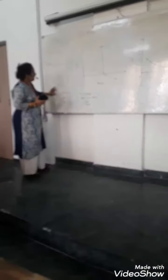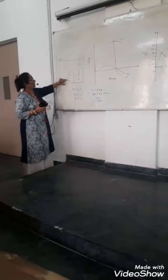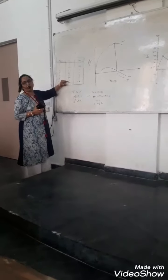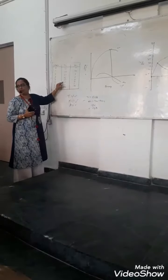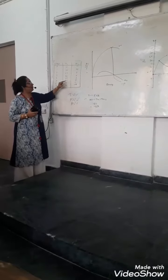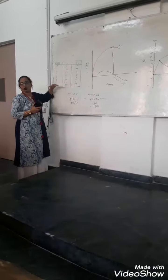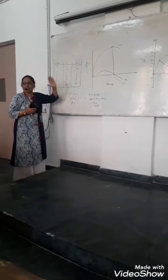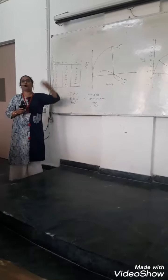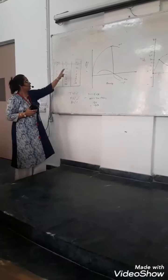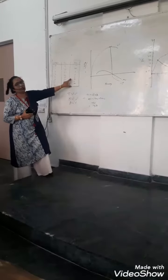Looking at the table, to calculate marginal utility: 30 minus 34 gives minus 4; 34 minus 35 gives minus 1; 35 minus 35 gives 0. We are subtracting the lower value from the upper value. So this column is total utility, this is the quantity, this is the total utility, and this is the marginal utility.